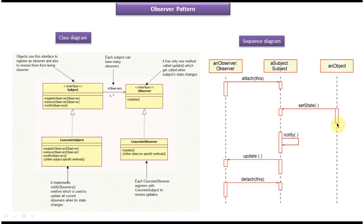First the observer attaches, then this object changes the status in the subject. When the state is changed, the subject sends a notification to the registered observer by calling the update method. Suppose at a later point of time this observer doesn't want to get any notification from the subject — it has to detach from the subject, or unregister from the subject, and that is what is shown here.